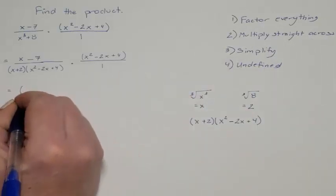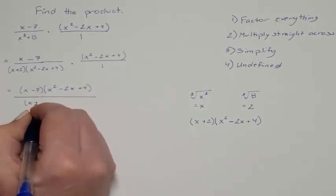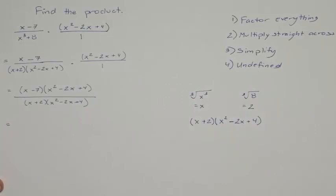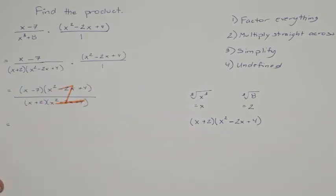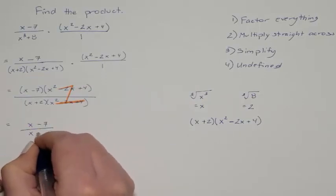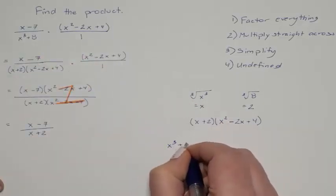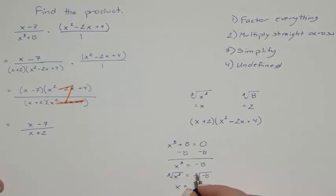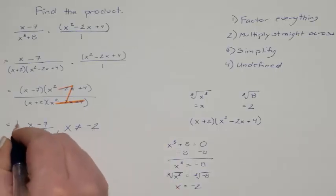Multiplying straight across gives (x − 7)(x² − 2x + 4) over (x + 2)(x² − 2x + 4) times 1. The entire parenthesis (x² − 2x + 4) appears on top and bottom, so they cancel. We are left with (x − 7) over (x + 2) as the simplified answer. For undefined values: x³ + 8 = 0, so x³ = −8, and taking the cube root gives x = −2. So x can never equal −2.